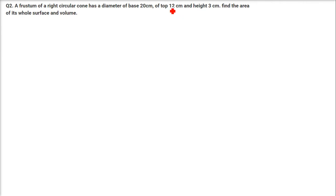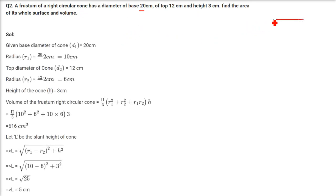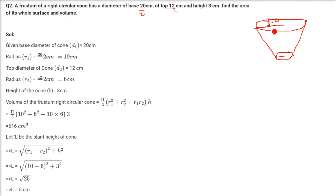A frustum of a right circular cone has a diameter of base 20 cm, top 12 cm, and height 3 cm. Find the area of its whole surface and volume. The radii are: r1 = 20/2 = 10 and r2 = 12/2 = 6. The height from top to bottom is 3 cm.